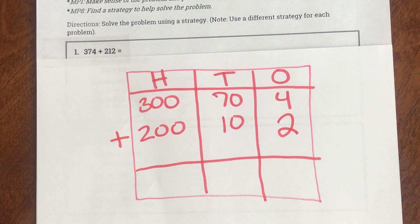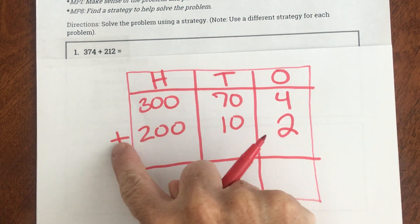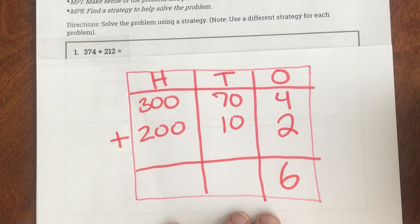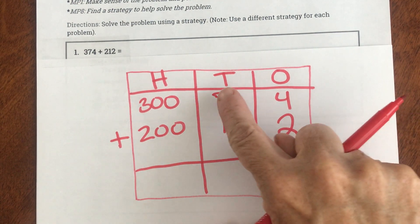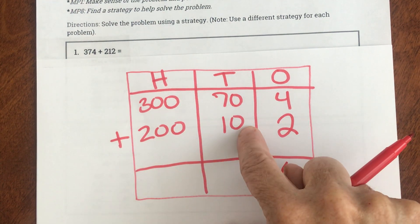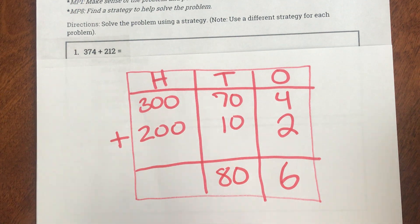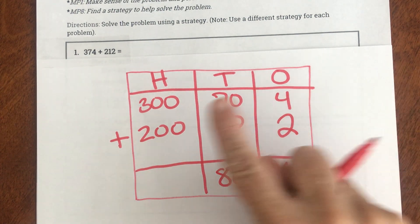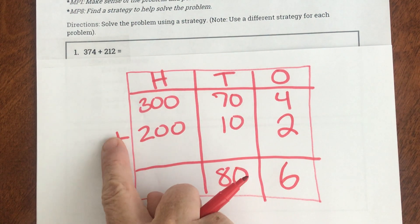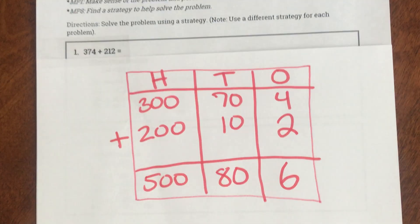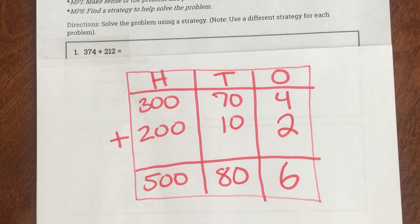Step two says add the ones. So 4 + 2 is 6. Step three says add the tens. 70 + 10 would be 80. And then step four is add the hundreds. 300 + 200 would be 500. Then my last step says rewrite in working form and add.